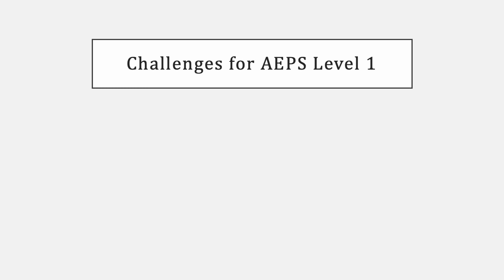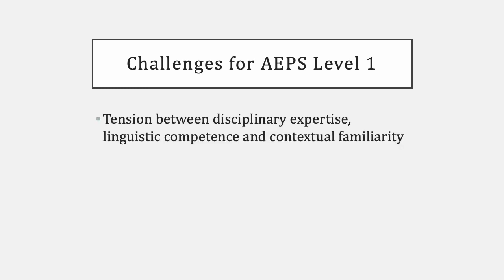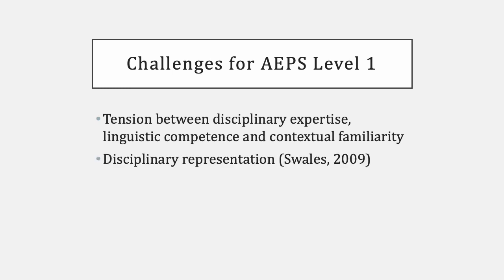There are some challenges for the students on the Academic English for Postgraduate Studies Level 1 programme, or the APES programme as we call it. There's a tension between their disciplinary expertise — as they are often teaching assistants in their home countries or already have postgraduate degrees — and their linguistic competence and their contextual familiarity. They can find it quite frustrating that they don't understand the way everything functions in UK higher education. There's also the issue of disciplinary representation that Swales mentions, where we find quite a lot of social science students and far fewer hard science students — but that doesn't mean we shouldn't endeavour to account for these disciplinary differences and ensure that all disciplines are equally represented.